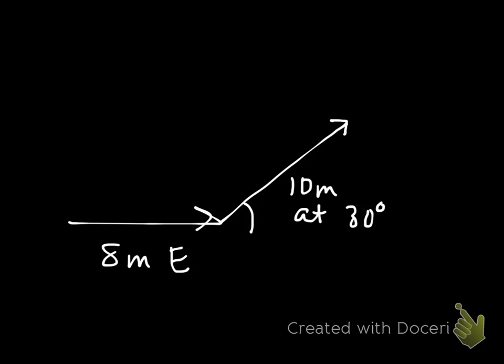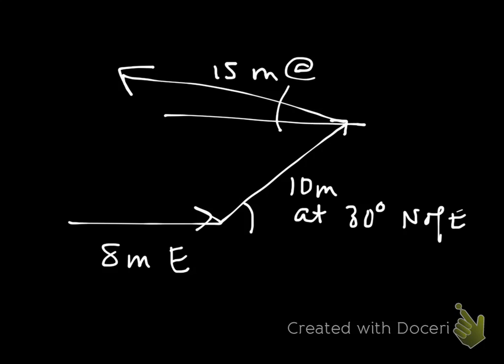Let's talk about what we do if there are three. For instance, if somebody goes 8 meters east, then 10 meters at 30 degrees north of east, and then 15 meters at 10 degrees north of west. How do you get a resultant for that? Same way you get a resultant for anything else. You connect the tail of your first vector to the head of your last vector.